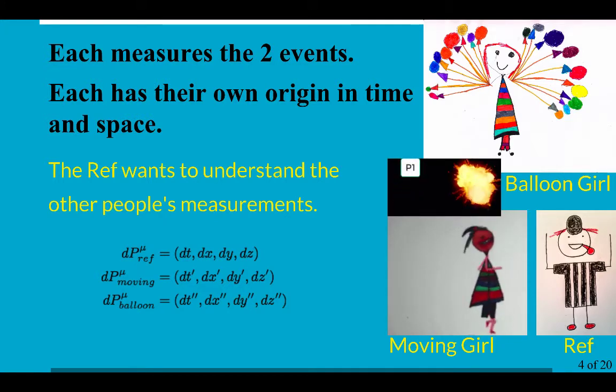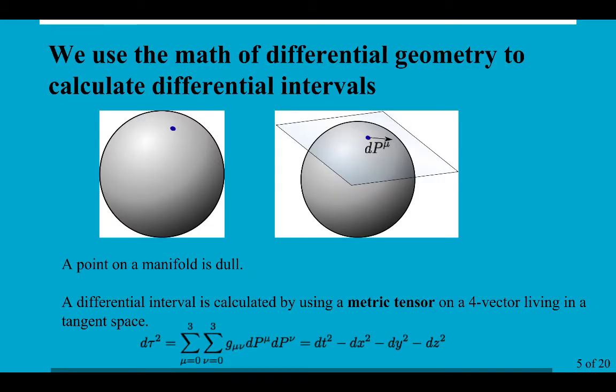And what we want to do is have the ref understand what's going on with those other two people who are measuring with exactly the same equipment. The way we do this today is to use the math of differential geometry to calculate differential intervals. So a point on a manifold is kind of dull. Instead, what we do is we create a tangent space that creates this tangent vector that we can then use a metric tensor to contract.